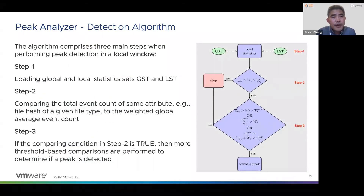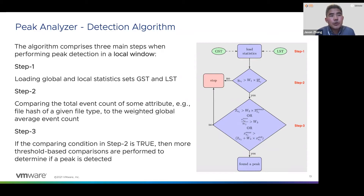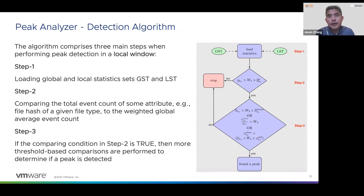The detection algorithm mainly comprises three steps. The first step is to load the global and local stats tables as defined in the GST and LST tables. In the second step, we do some comparison to shortlist possible peak candidates from the local window. In the third step, it involves more thresholding comparison to finalize the detection logic — if one of the comparisons is true, we believe a peak is found. There are some weighting factors denoted as w1, w2, w3, and w4, which can be optimized depending on your application. Please feel free to ask us during the Q&A session if you have questions.